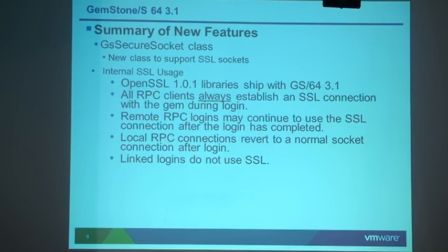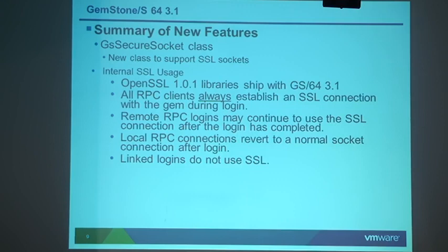We also added SSL support in 3.1, used both internally and with an API from Smalltalk via a new class called GS Secure Socket. This class is a subclass of GS Socket, so it has inherited behavior you'd expect, and it handles things like X.509 certificates to set up secure encrypted socket channels. Internally, we now use SSL to start all RPC logins, so when a client Smalltalk image talks to a GemStone server gem, all that login traffic is now encrypted automatically.